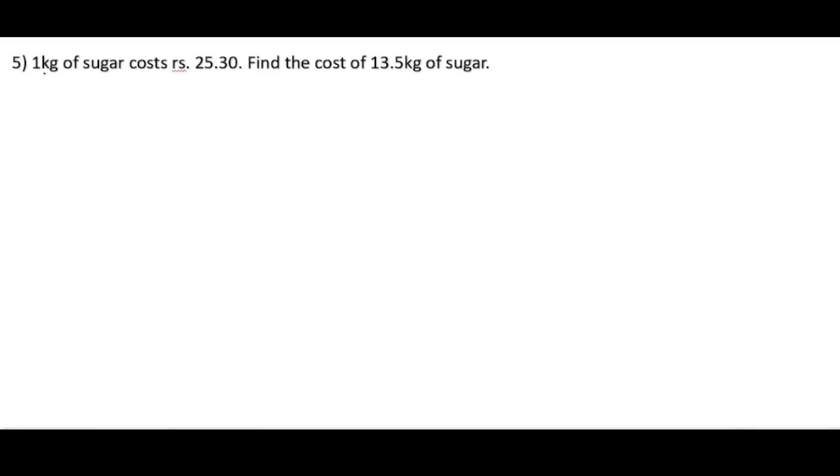Now this is the fifth problem: 1 kg of sugar costs rupees 25.30. Find the cost of 13.5 kg of sugar. In the solution, first we will write what is given. The cost of 1 kg of sugar equals rupees 25.30.